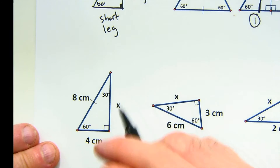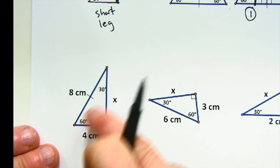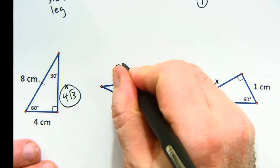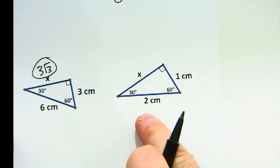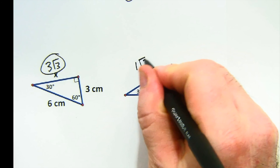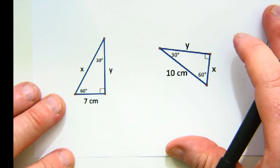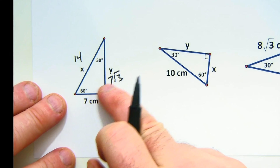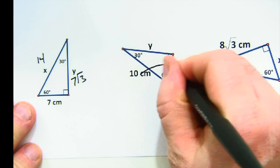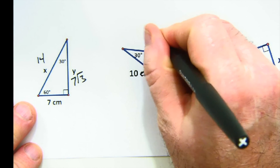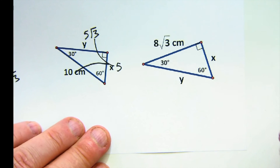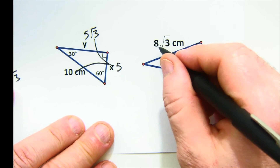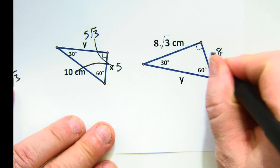Half of 8 is 4, and 4 times √3 is 4√3. Half of 6 is 3, and 3 times √3 is 3√3. Half of 2 is 1, and 1 times √3 is √3. If the short leg is 7, the hypotenuse is 14 and the long leg is 7√3. If the hypotenuse is 10, the short leg is 5 and the long leg is 5√3. If the long leg is 8√3, dividing by √3 gives 8 for the short leg, and doubling gives 16 for the hypotenuse.